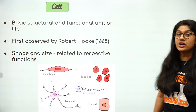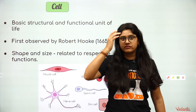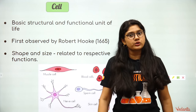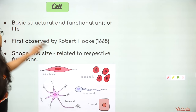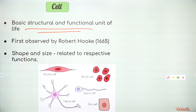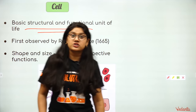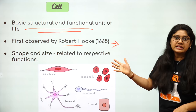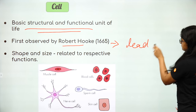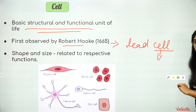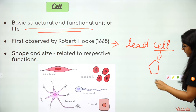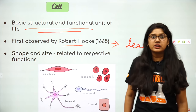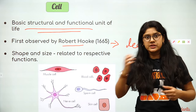The cell is a structural and functional unit of life — this is a well-known fact to all of us. It was first discovered by Robert Hooke in the year 1665. He first observed it in a dead cell and called it a 'cell' because cells look like a small honeycomb structure, more like a prison cell in which prisoners stay.